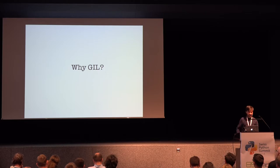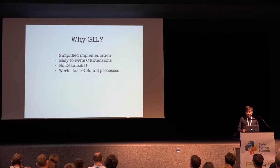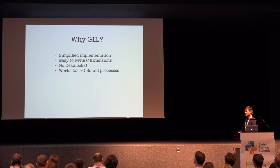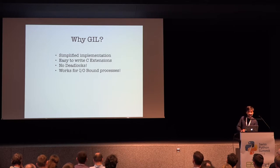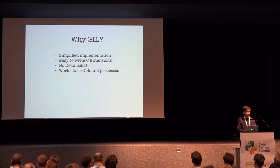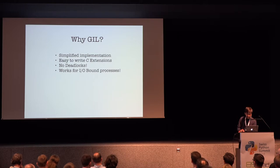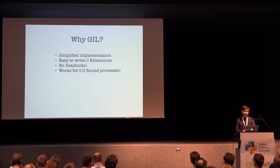Why GIL? The reason behind GIL is that it made the implementation of the interpreter very simple and easy to reason about. It's easy to write C extensions — one of the major reasons for Python's popularity in the 90s was the ease of writing C extensions, and it's quite easy even now. Since you have just one global lock, you don't have deadlocks. And as you've seen, it works great for IO-bound processes because most of the time is spent waiting, and many threads can wait together without holding the GIL.